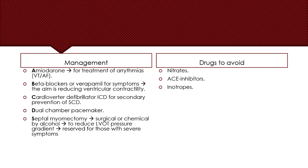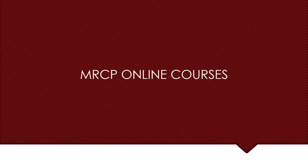Treatment includes drug therapy, device therapy, and surgical treatment. Amiodarone is used for treatment of arrhythmias including VT/AF. Beta blockers or verapamil are used for symptom relief, with their basic aim being reduction of ventricular contractility. A cardioverter defibrillator (ICD) is used for secondary prevention of sudden cardiac death. Dual chamber pacemaker is rarely used to reduce LVOT pressure gradient and is reserved for those with severe symptoms. Nitrates, ACE inhibitors, and inotropes are contraindicated in such patients as they are associated with hemodynamic compromise.